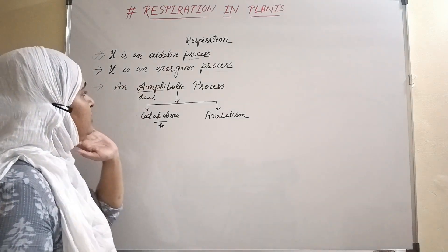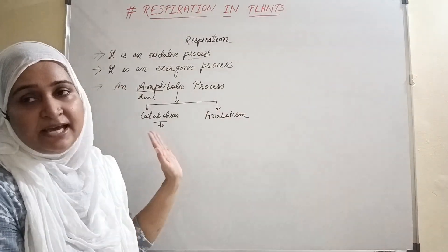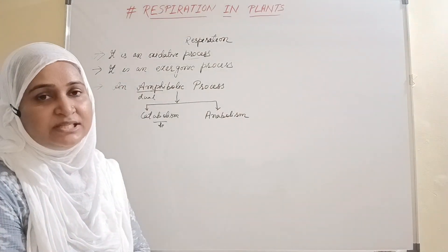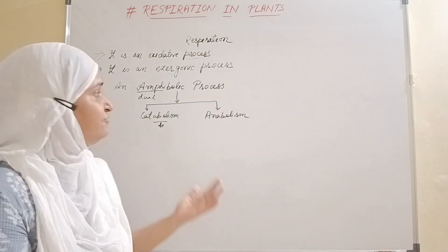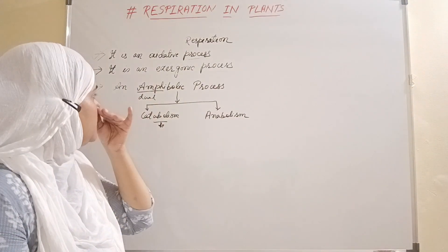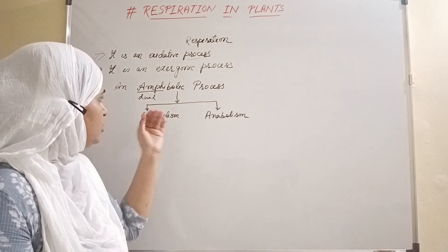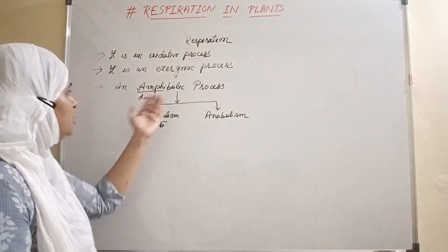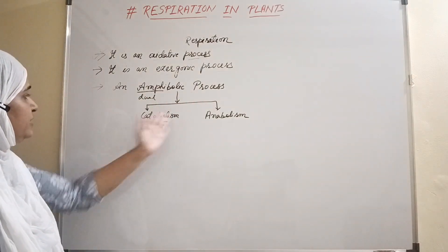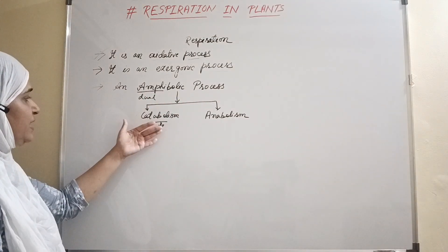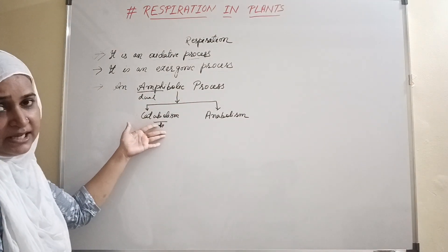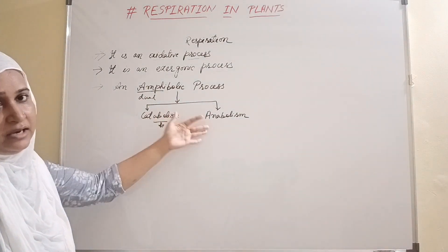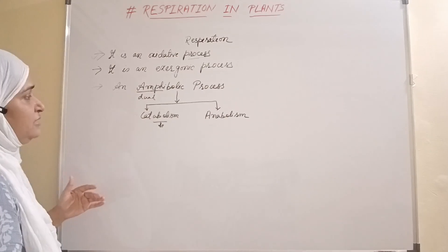What can we call this? Respiration is an amphibolic process. Why is it amphibolic? Because it has duality. We can see nature in both types. We can see catabolism and anabolism.